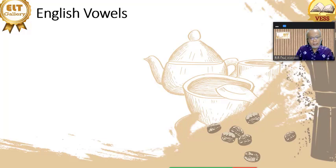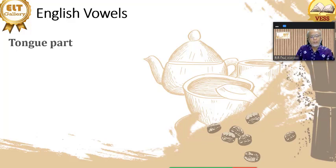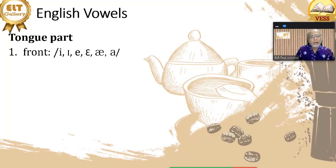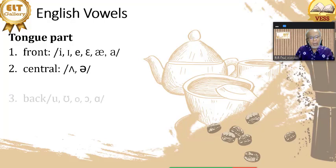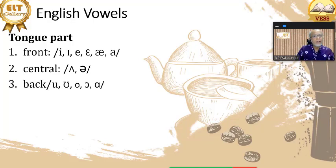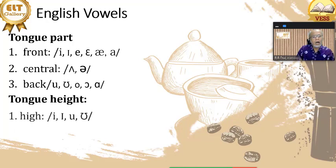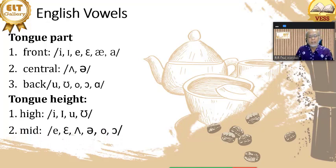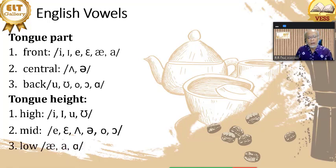In English we can classify or describe a vowel according to the part of the tongue which moves, or tongue part. In that case we have front vowels, central vowels, and back vowels. According to the height of the tongue we have high vowels — E, I, U — mid vowels, of which we have six in English, and low vowels: A, and more.